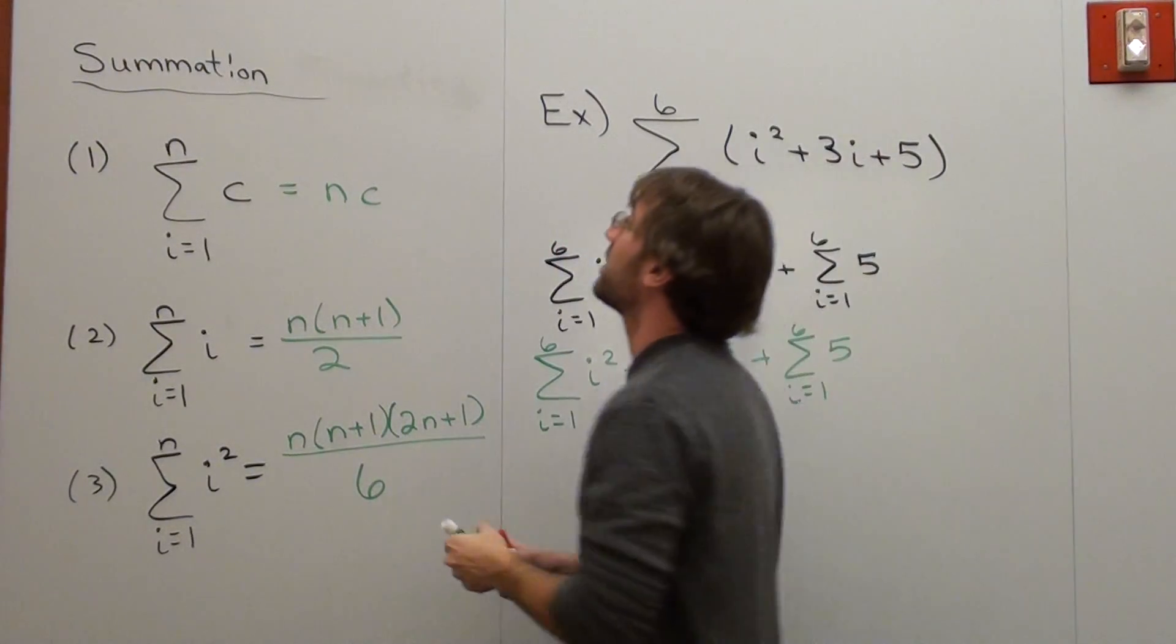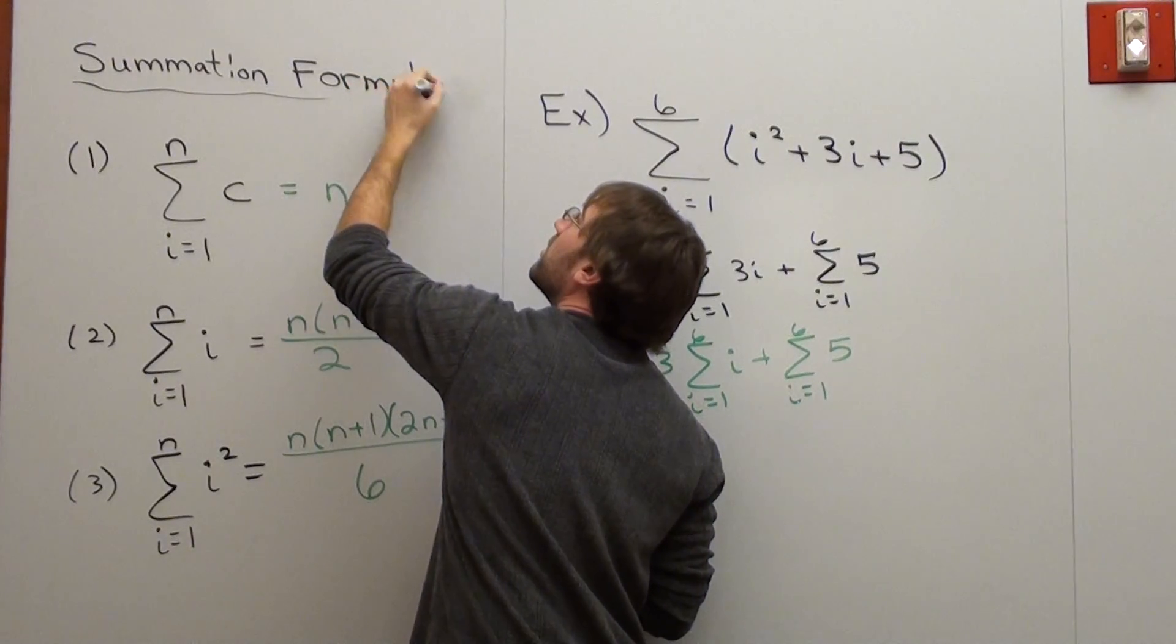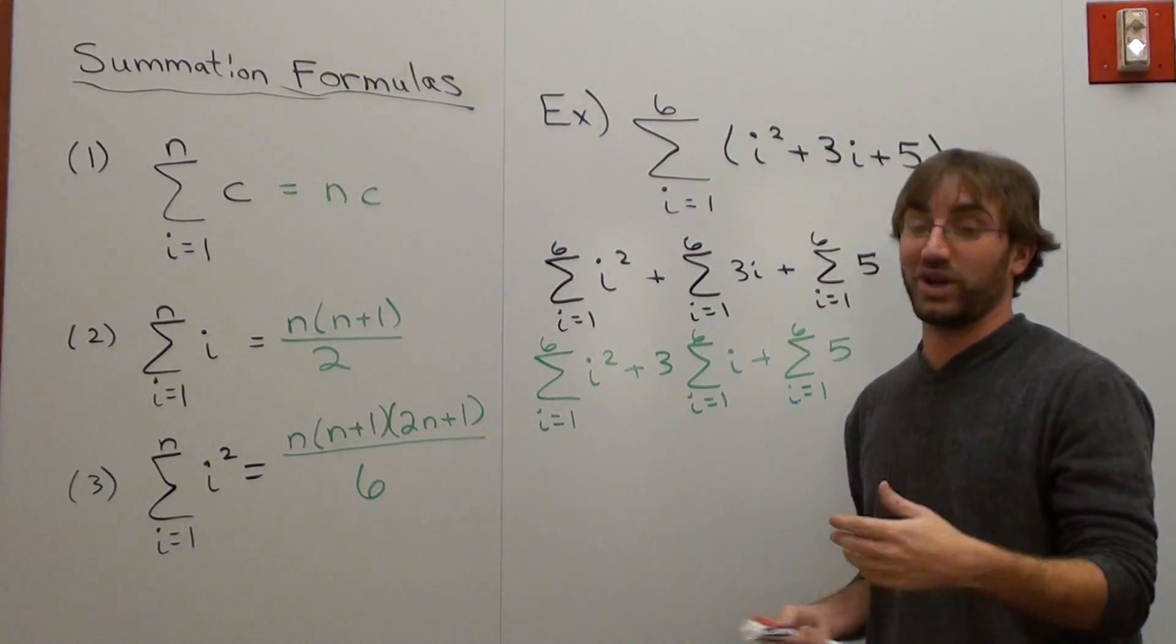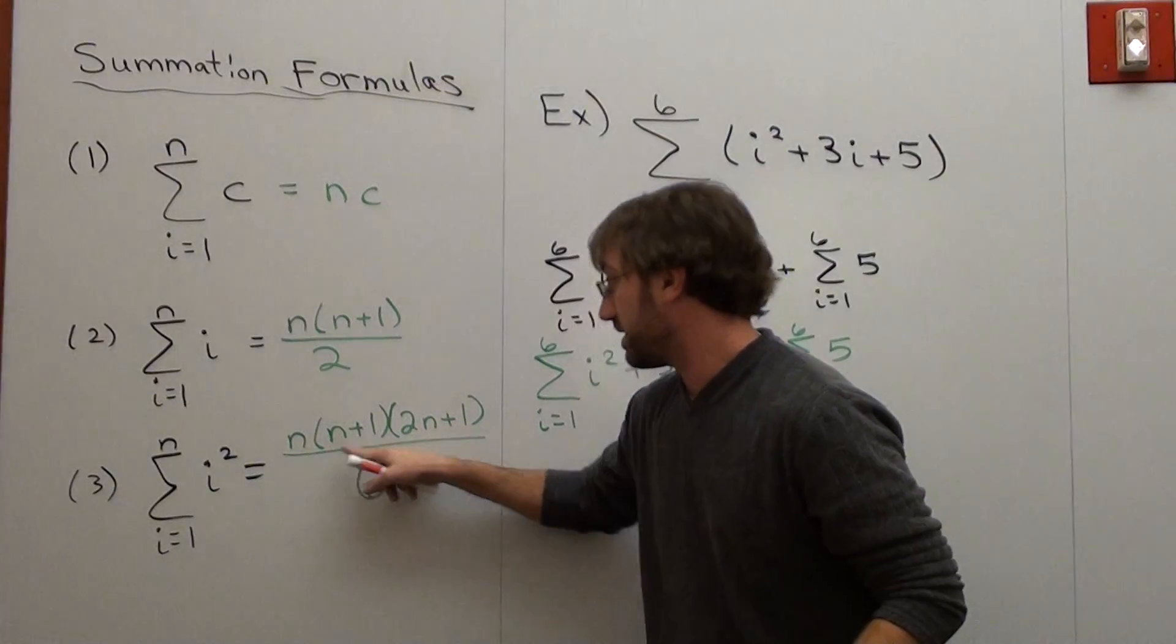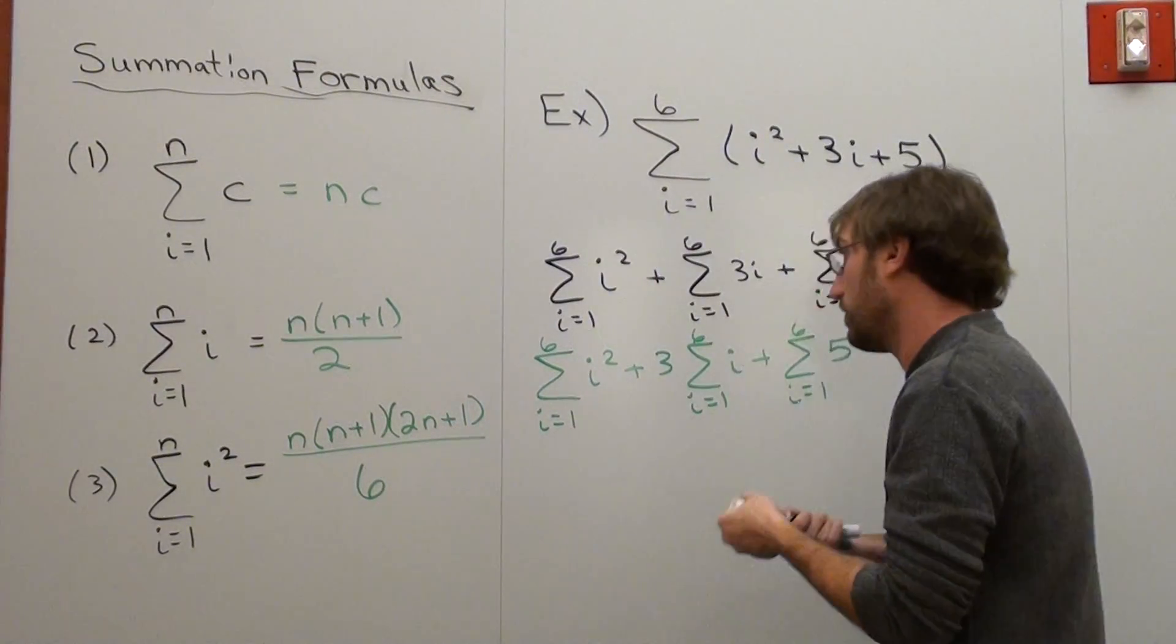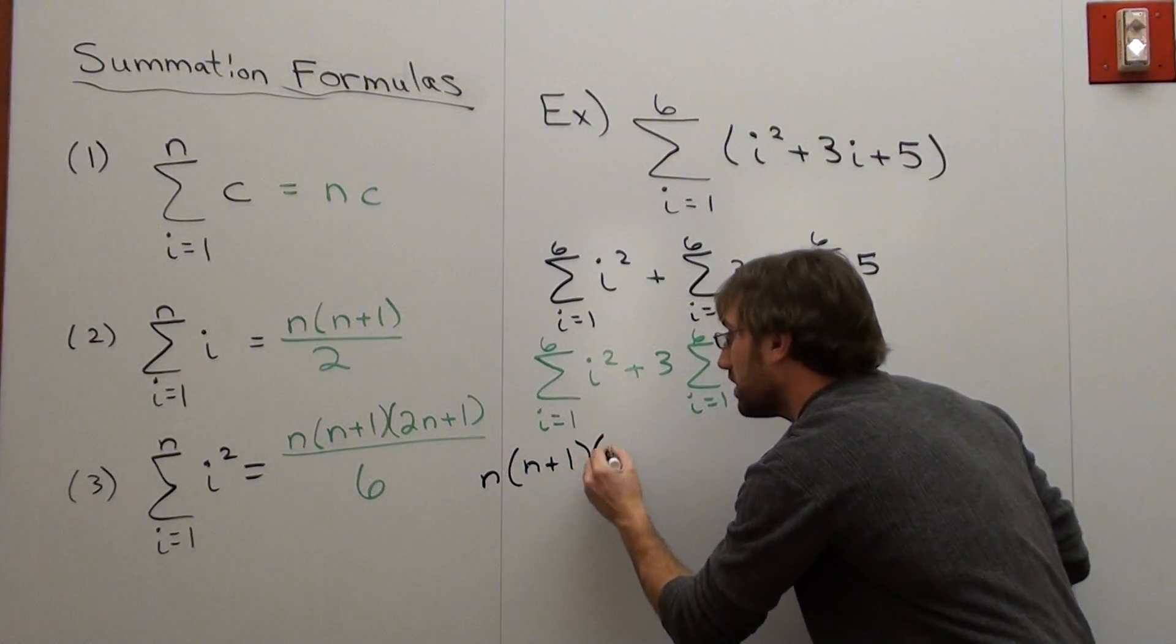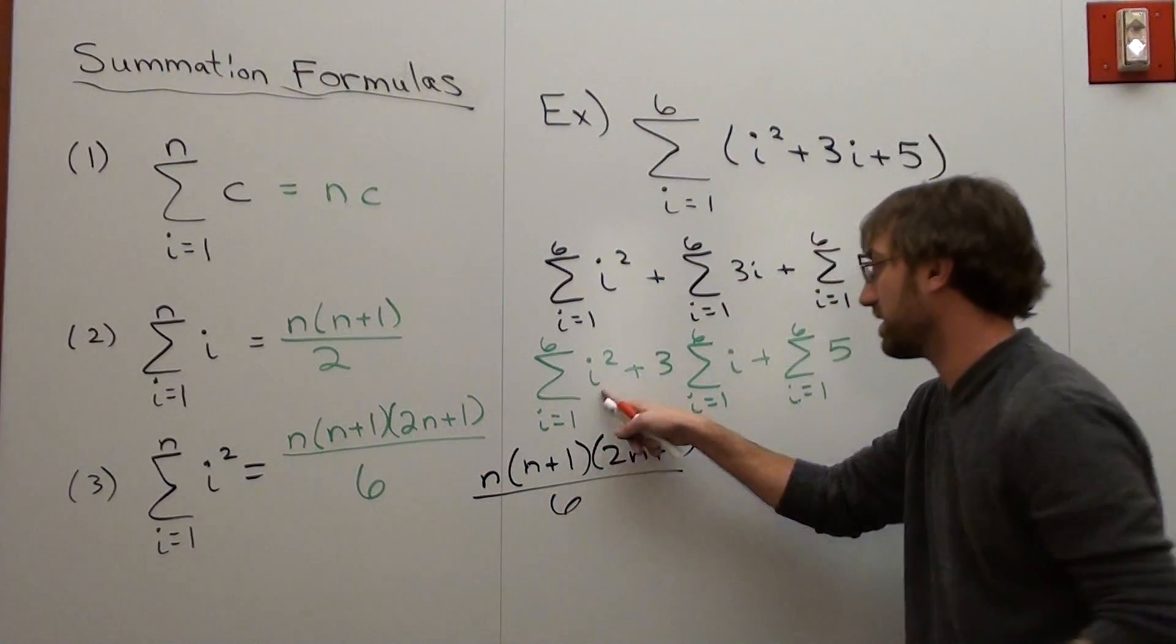So here we go. We're going to replace i squared with this: n times the quantity n plus 1 times 2n plus 1 over 6. So let's do that. n times (n+1) times (2n+1) over 6. We're replacing i squared with that.